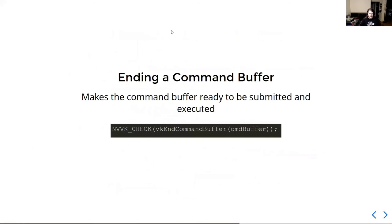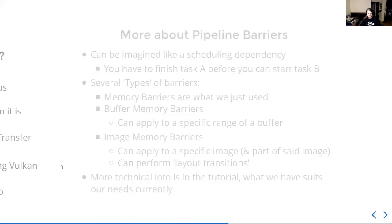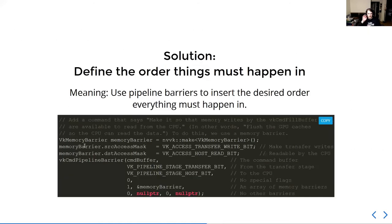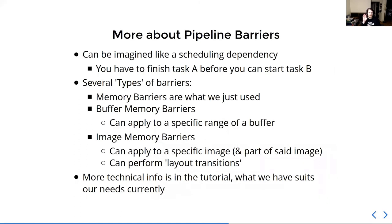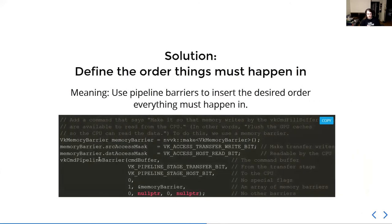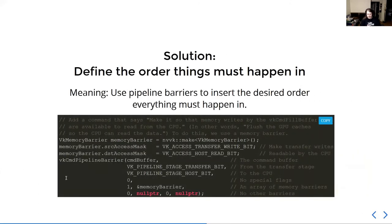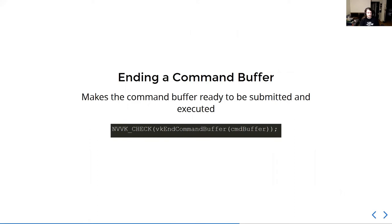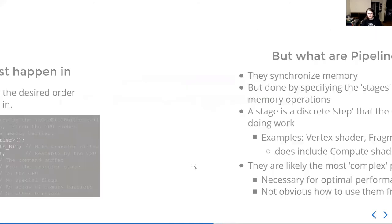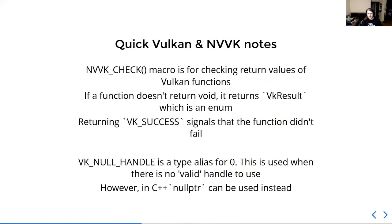If there was one takeaway from all of this discussion about pipeline barriers — I could have spent an hour on it — it's that all we need is these 10 lines of code and we get what we need. The optimal usage recommendations state that you should put as many barriers as you can into one pipeline barrier command. But it's much nicer to keep everything simple, and that's what this tutorial tries to follow. So we've done our filling of the command buffer, and we want to end it so we can submit it. To end it, we call vkEndCommandBuffer.